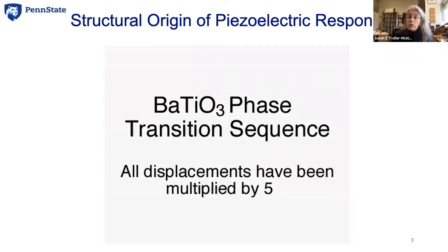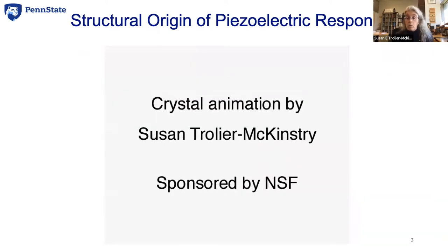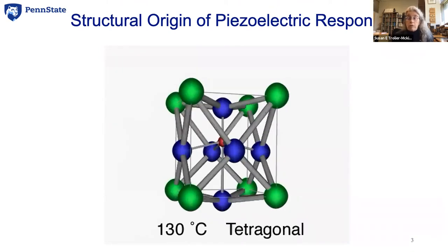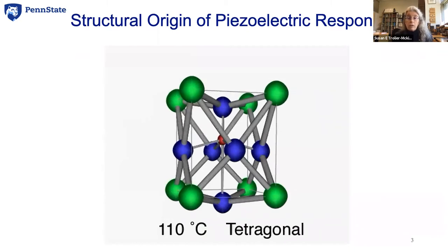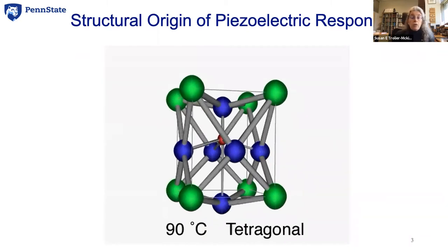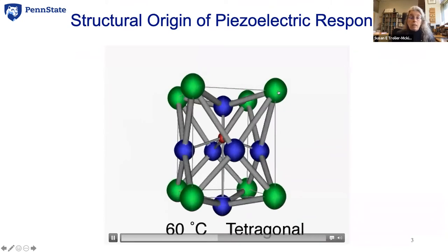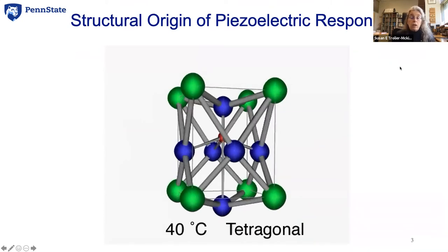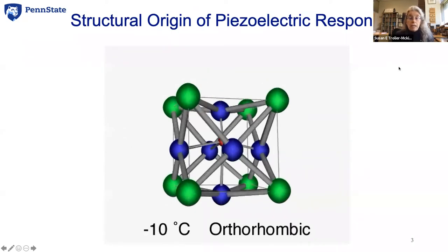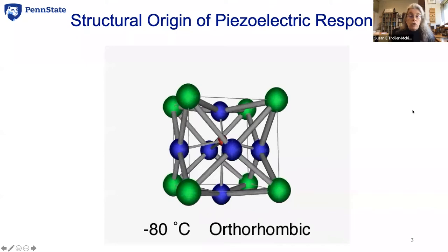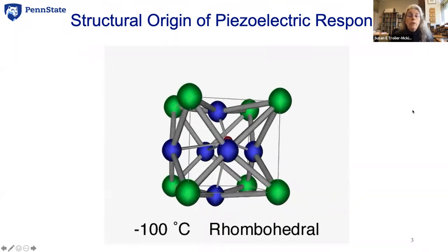To understand what causes piezoelectricity, it's useful to think about the most important crystal structure for this application, which is the perovskite crystal structure. You can imagine atoms like lead or barium sitting on the corners of the unit cell — shown in green. The atom shown in red is the titanium or zirconium atom, and the atoms shown in blue are oxygen atoms.